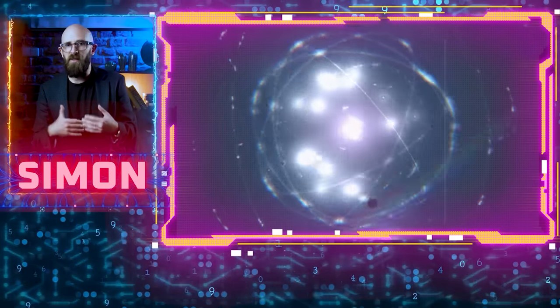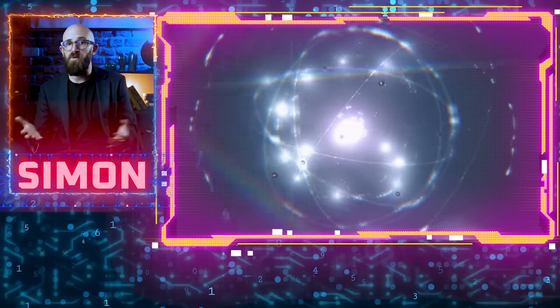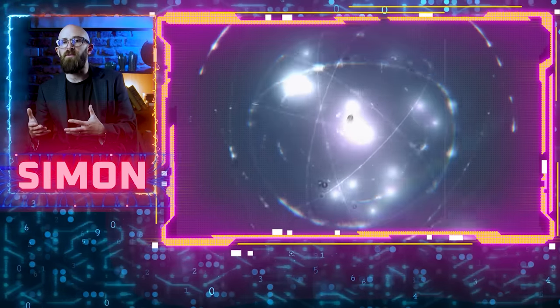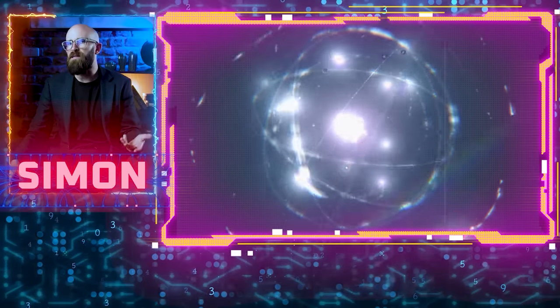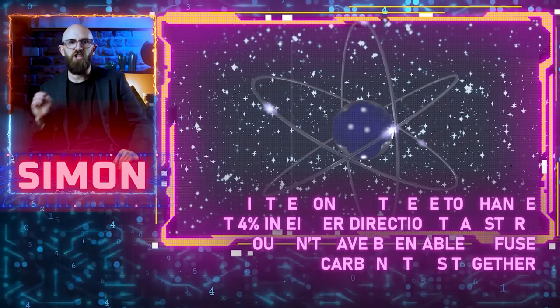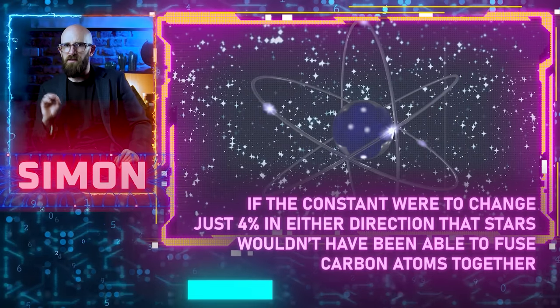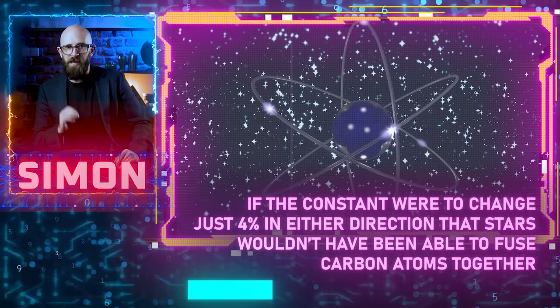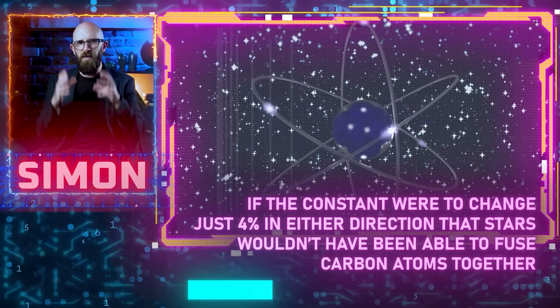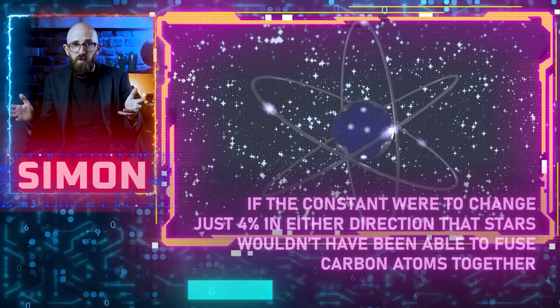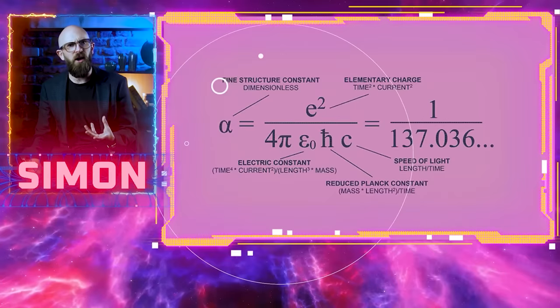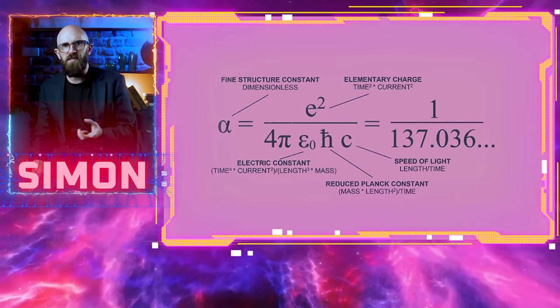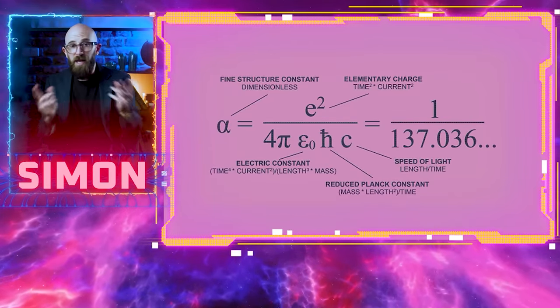If the force was stronger, then these chemical reactions may not be possible, or at the very least all of chemistry would be dramatically different. On the other hand, if the fine structure constant were lower, resulting in a weaker electromagnetic force, electrons would orbit further away making atoms and molecules unstable. It's estimated that if the constant were to change just four percent in either direction, the stars wouldn't have been able to fuse carbon atoms together, thus making life as we know it impossible. If the force became even weaker, then fusion wouldn't be possible at all and there would be no stars.